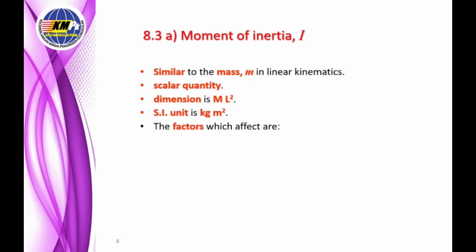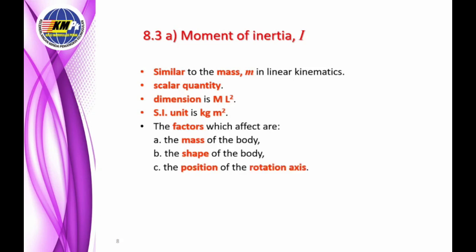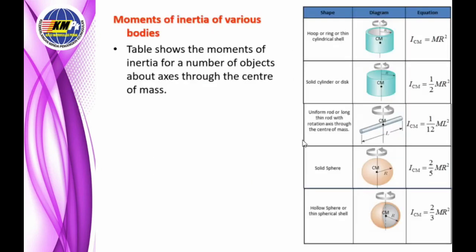The factors which affect the moment of inertia are: first, the mass of the body — a heavier object tends to have a bigger moment of inertia; second, the shape of the body — the more mass is spread or distributed far from the center of rotation, the bigger the moment of inertia; third, the position of the rotation axis — if the axis is not positioned at the center of balance, the moment of inertia will be bigger. Scientists have derived formulas for moment of inertia for various body shapes including cylindrical shell, solid cylinder, uniform rod, solid sphere, and hollow sphere.